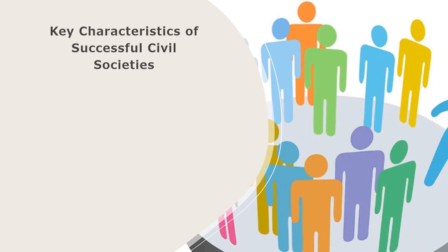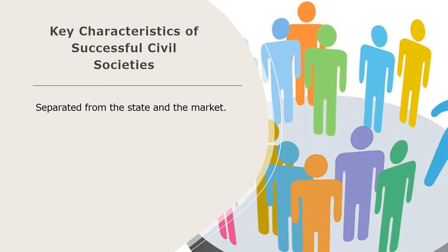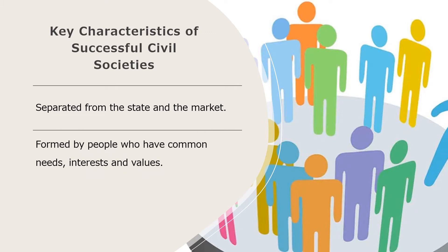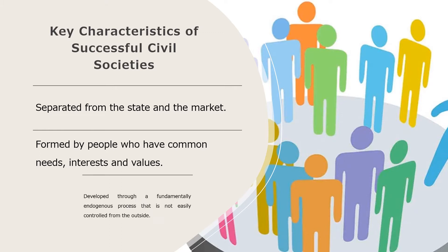Let us talk about the key characteristics of successful civil societies. The first one is that it is separated from the state and the market. Followed by, it is formed by people who have common needs, interests, and values. Lastly, it is developed through a fundamentally endogenous process that is not easily controlled from the outside. The civil society can have a positive influence on both the state and the market, and has become increasingly important in the promotion of good governance, effectiveness, and accountability.